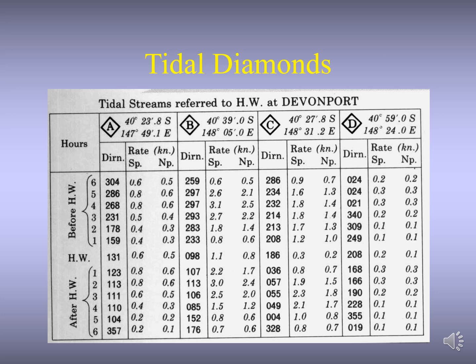This information is given at both spring tide and neap tide. DIRN stands for direction of the stream — that is the set of the tidal stream. The rate is the speed of the tidal stream. SP stands for spring tides and NP stands for neap tides. The 13 rows represent the hours of the tidal cycle, showing the six hours before high water, high water itself, and six hours after high water. HW stands for high water.